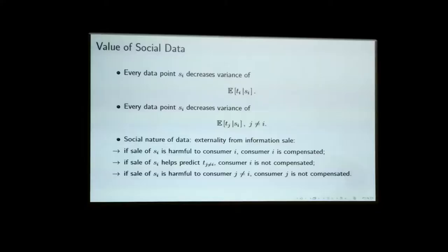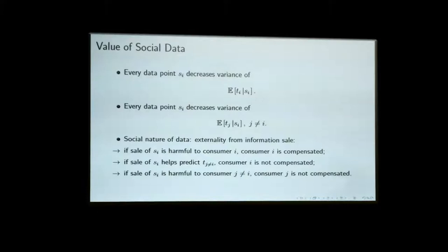Let me emphasize the social aspect of the data. Every data point gathered from a consumer will tell us something about his willingness to pay, his type. But because of the common nature of the data, it will also tell us something about the expected willingness to pay of other consumers. That is what creates the informational externality. Even if I anticipate that the information I'm forwarding to the intermediary — say a credit rating agency — will impact my resulting net utility, I will not and cannot be compensated for the value that this information has in the pricing of a third consumer. Nor is that other consumer compensated for the additional exposure he faces, given that the information displays some correlation. That's really the source of the externality.